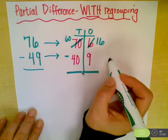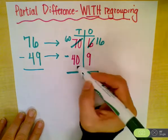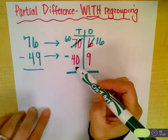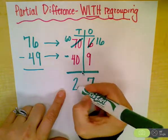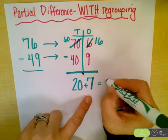Now I just get to subtract, and again, I'm starting on my ones side. So 16 minus 9 would be 7, 60 minus 40 equals 20, and now I just add 20 plus 7 equals 27.